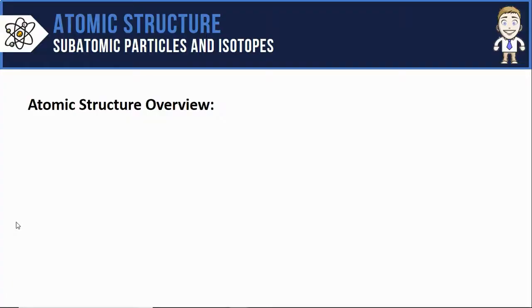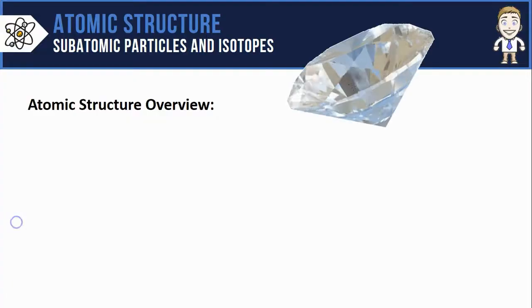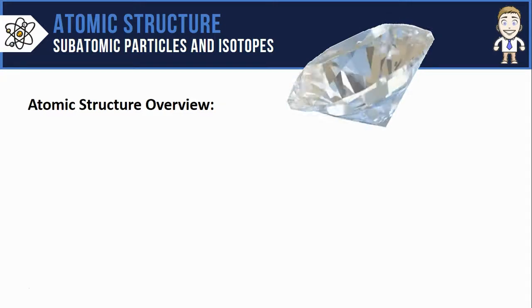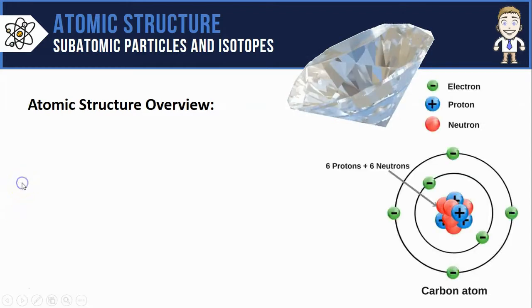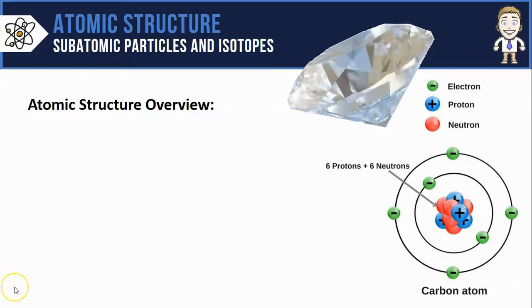Let's start off with a quick overview of atomic structure by analyzing a sample of diamond. Diamond is unique because it's one of the forms that pure elemental carbon can take on. That means the only particle that makes up a sample of diamond is carbon atoms like the one shown here on the bottom right.